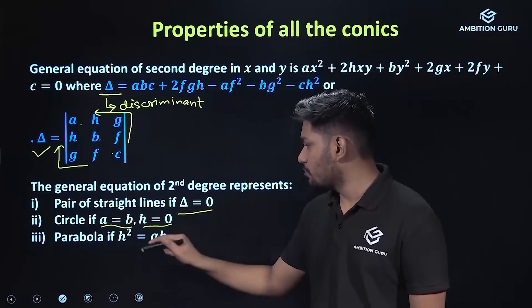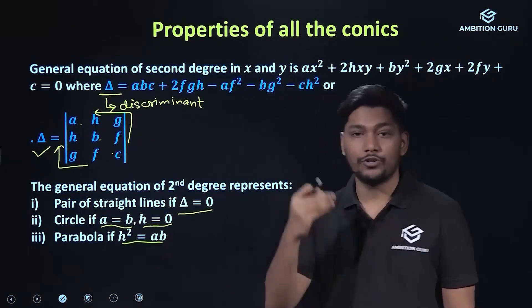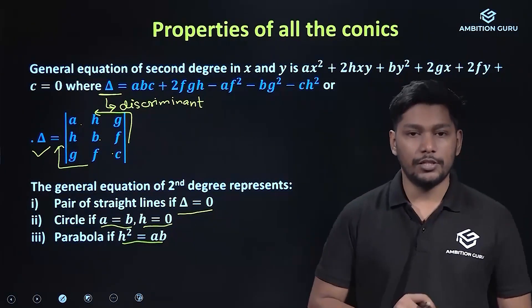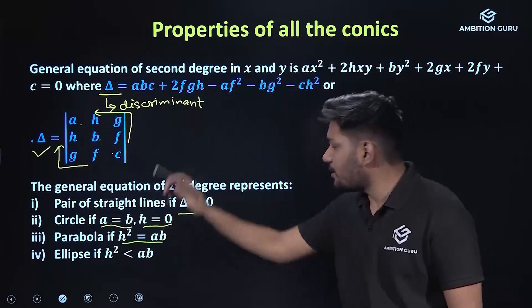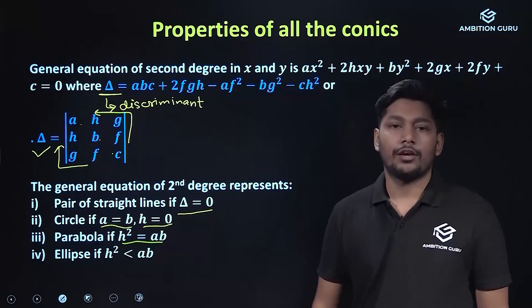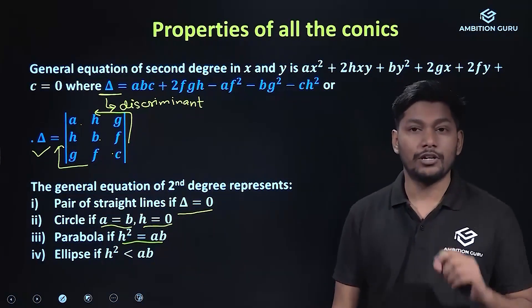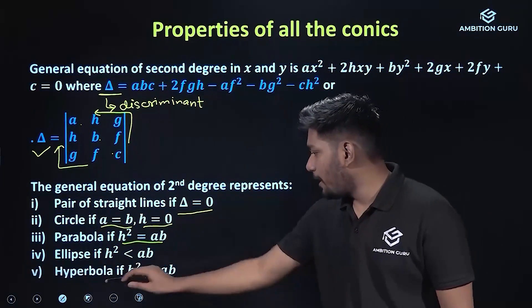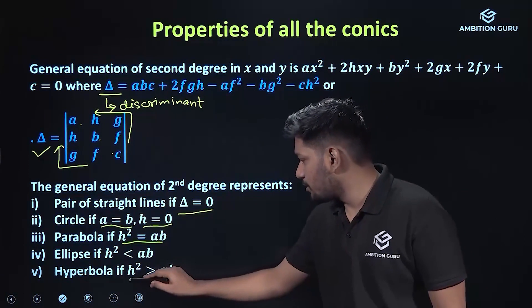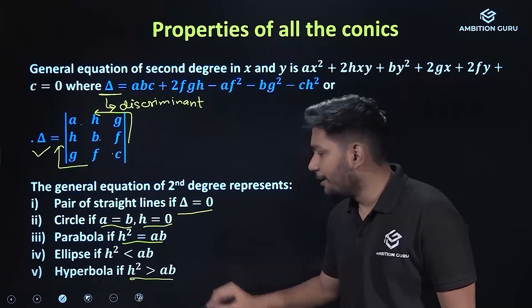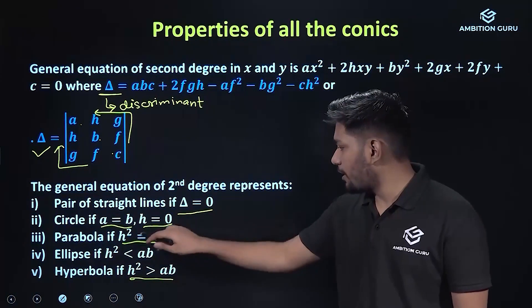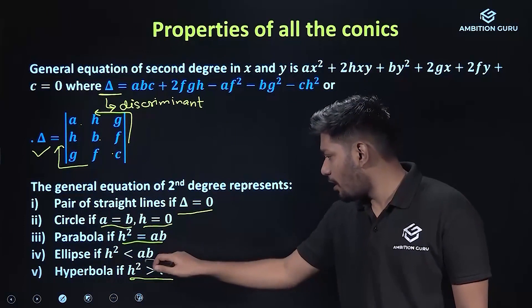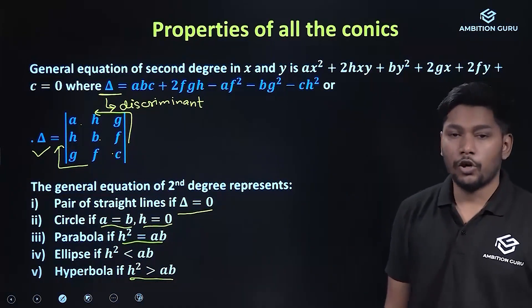For a parabola, h² equals ab. For an ellipse, h² is less than ab. For a hyperbola, h² is greater than ab. These are the conditions on h² relative to ab for classifying the conic.